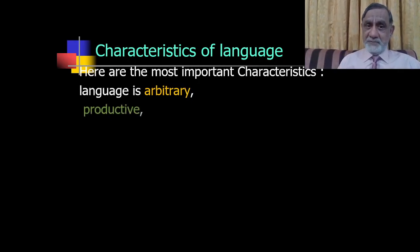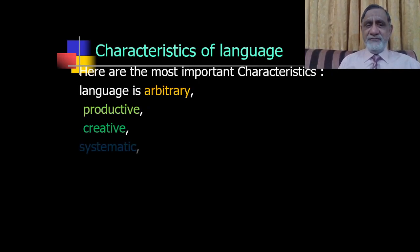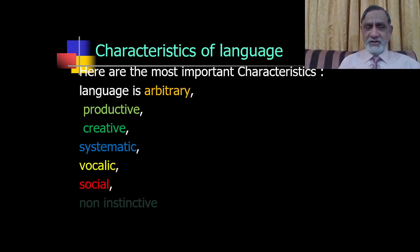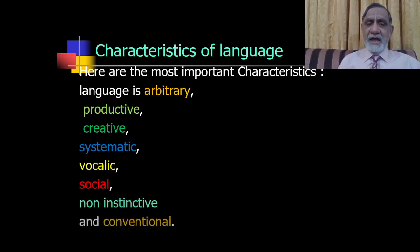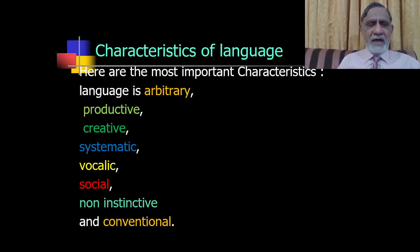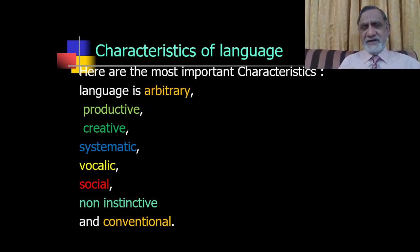Here are the most important characteristics of language. Language is arbitrary, productive, creative, systematic, vocal, social, non-instinctive, and conventional. Some of these characteristics are mentioned here, and for each characteristic we have a slide to explain.